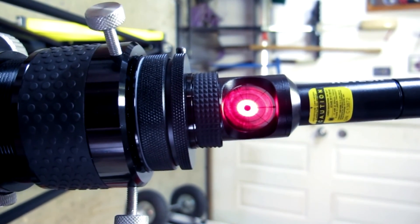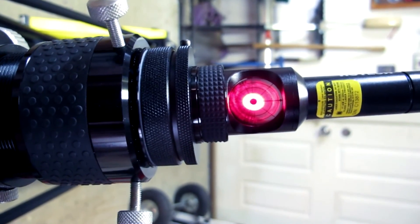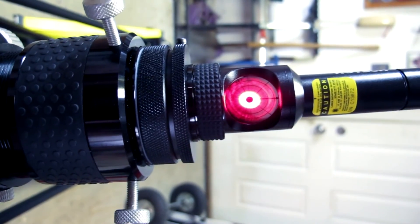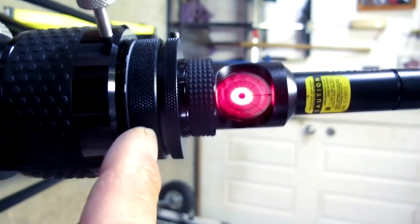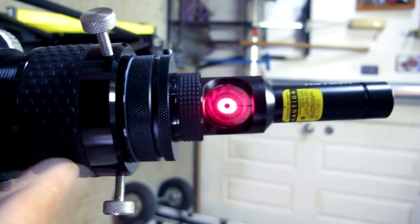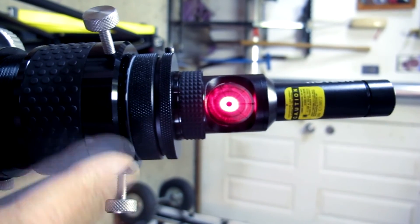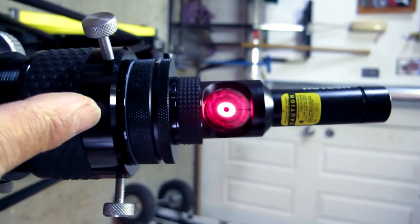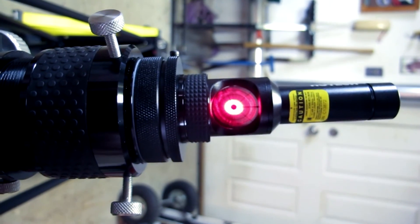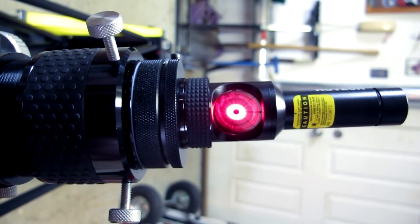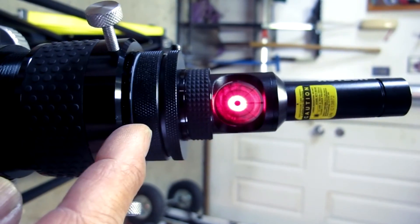So here we see the coma corrector inserted into the focuser and the HOTEC collimator inserted into the coma corrector. It's tightened down using the expansion ring in order to keep it centered. But one thing I want to show you here is that here are the three screws that would normally lock your eyepiece into the coma corrector. Now these are not being utilized now because the collimator has its own tightening mechanism which is self-centering.